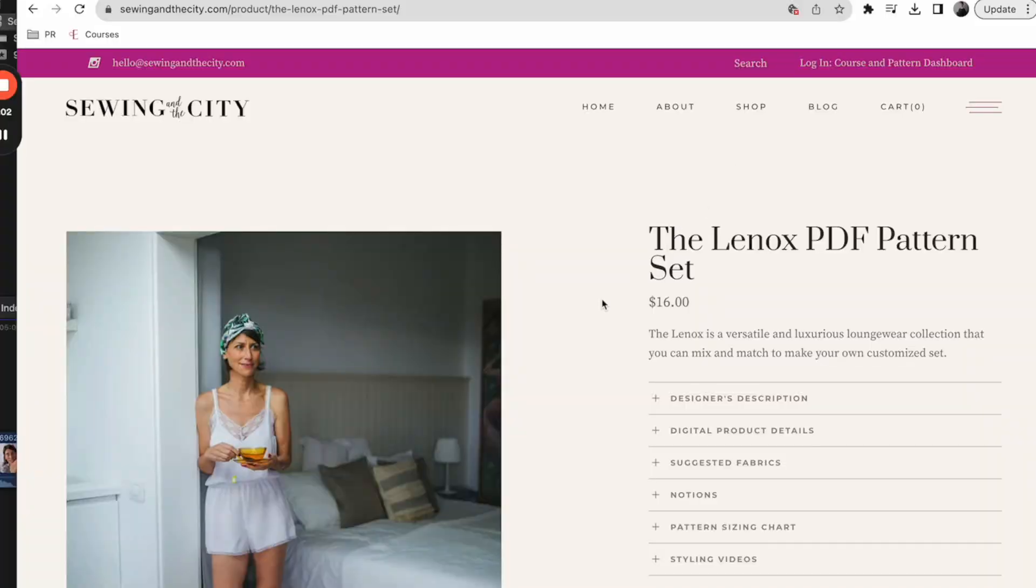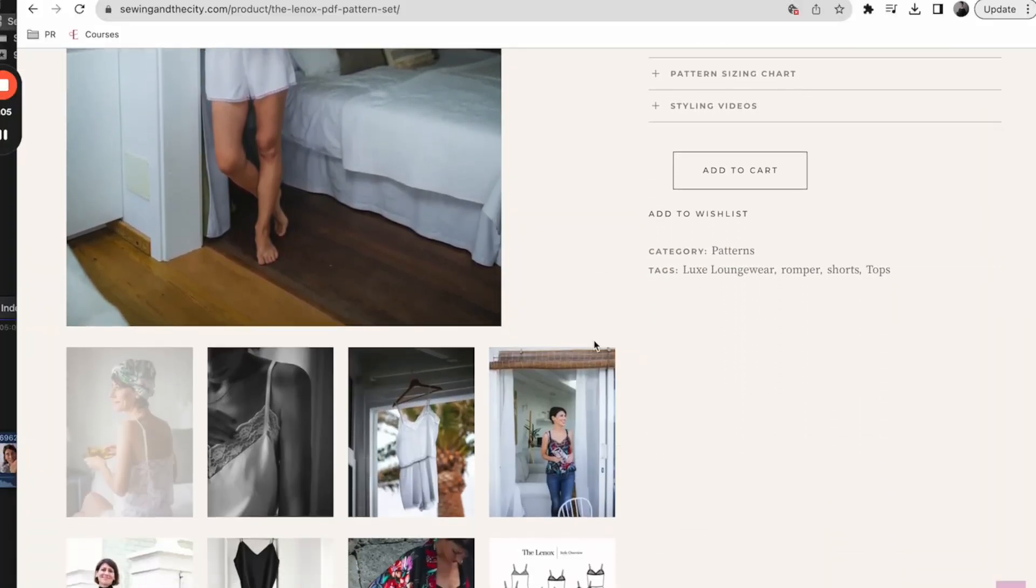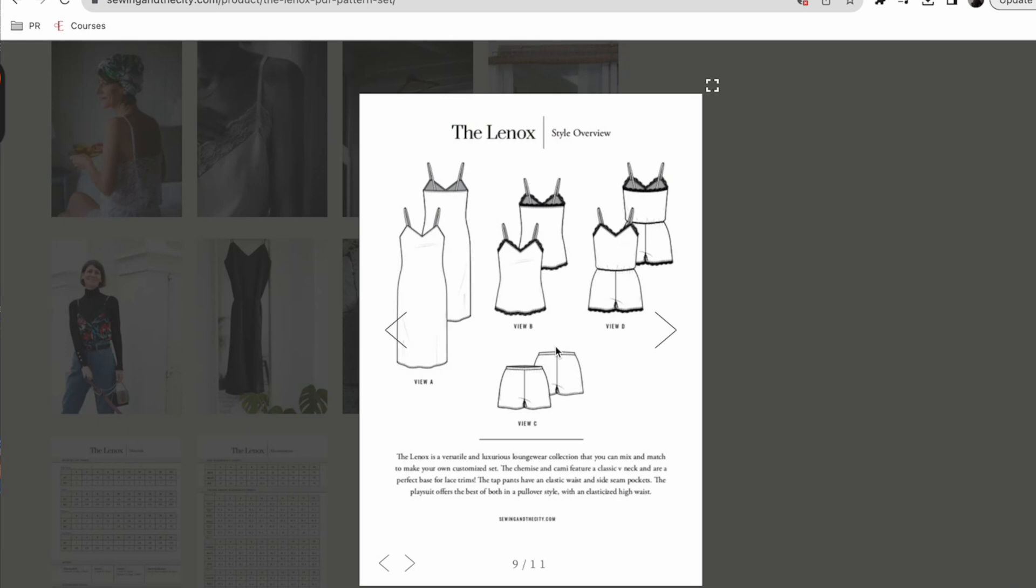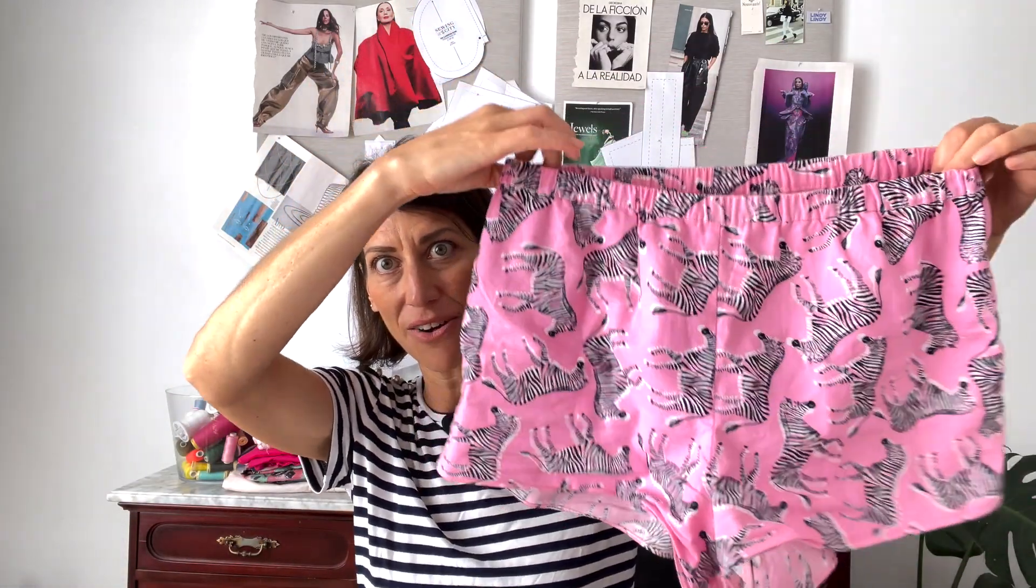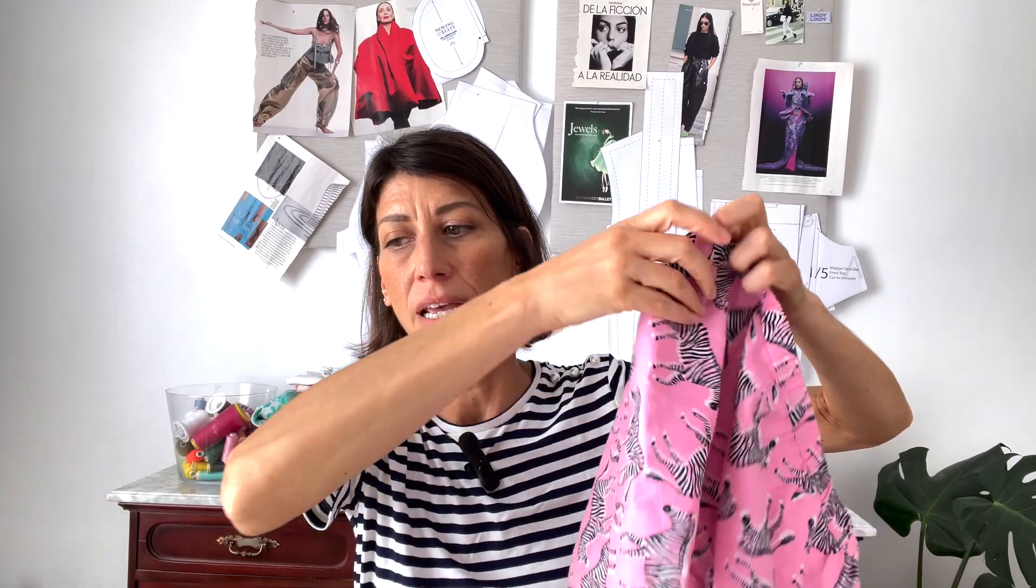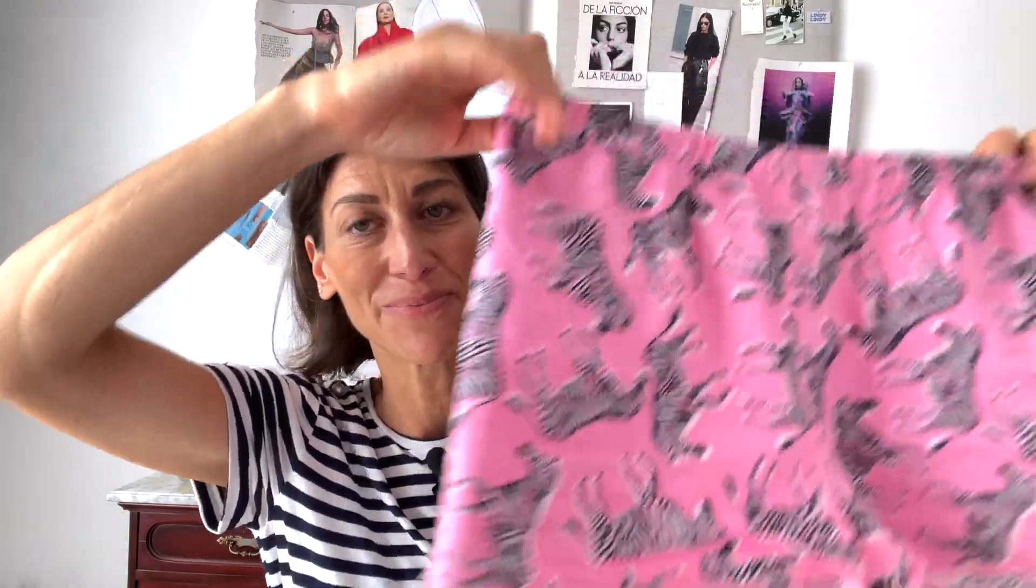So today we're going to be working with my Lennox pattern, which comes with these shorts, a cami, as well as a romper. So the shorts normally are not super short, but they do have the side seam as well as a pocket option. So we're going to be eliminating the side seam altogether using this hack. So you can use any little shorty pattern. So this fabric was an old pillowcase that I picked up and have to be honest, I've picked up a few more along the way.